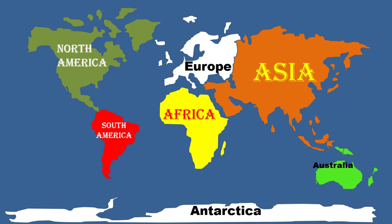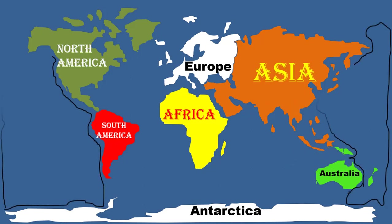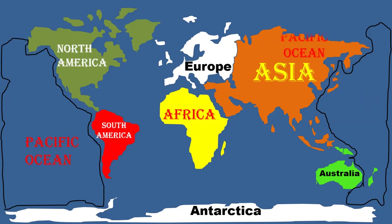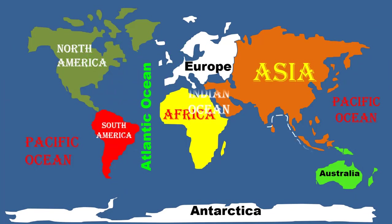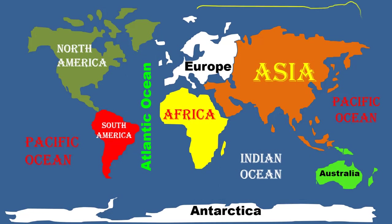The last one is Australia — it is the smallest continent. We also have five oceans: the Pacific Ocean on its eastern and western sides, then the Atlantic Ocean, the Indian Ocean, the Antarctic Ocean, and the smallest one is the Arctic Ocean.